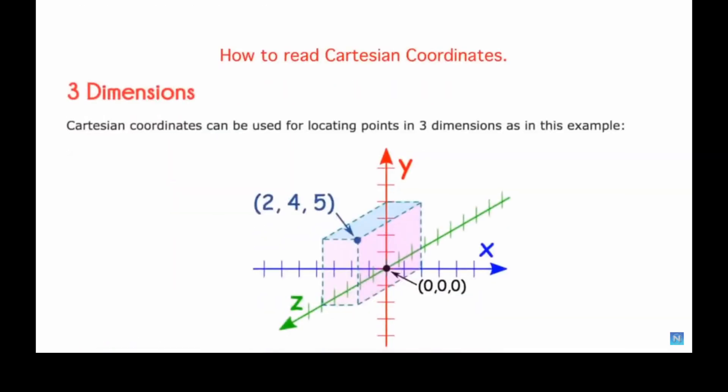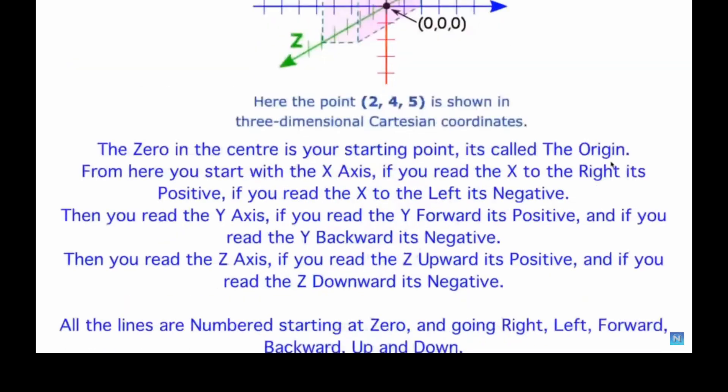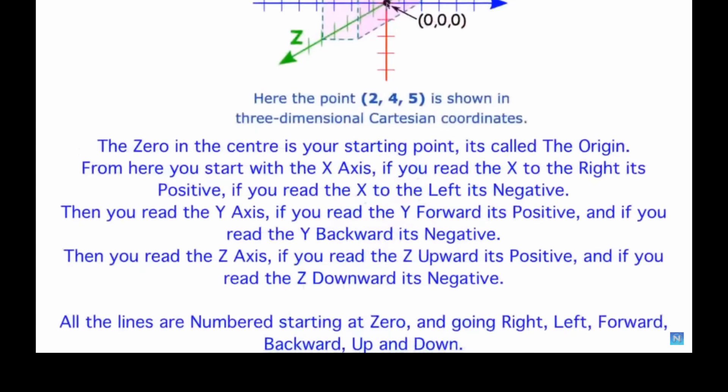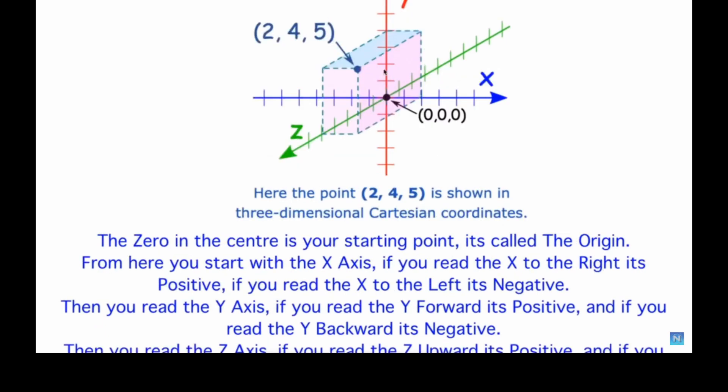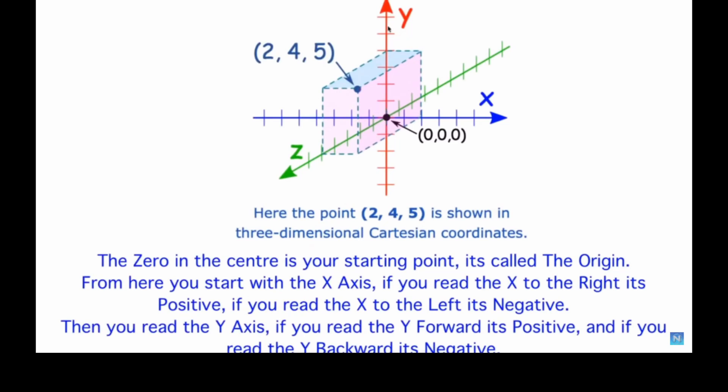Okay, how to read Cartesian coordinates. I'm not going to spend too much time on this, just give people a rundown on it. Cartesian coordinates can be used for locating points in three dimensions. Zero is here in the center, your starting point, called the origin. From here you start with the x-axis. If you read the x to the right it's positive, if you read it to the left it's negative. Then you read the y-axis. If you read the y-forward it's positive, and if you read the y-backward it's negative. Forward is positive and backward is negative.